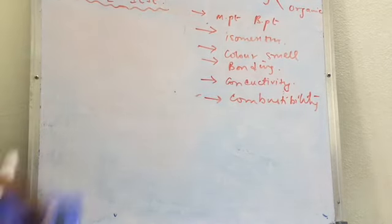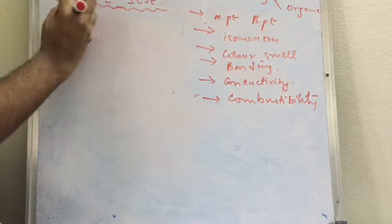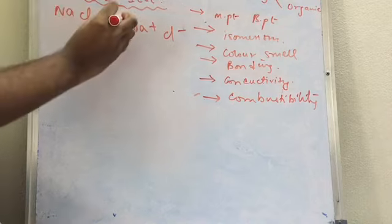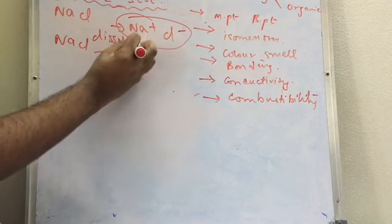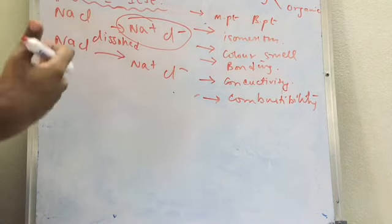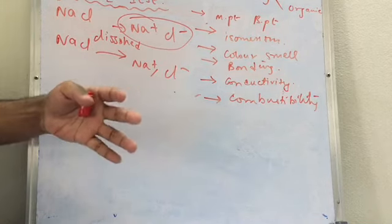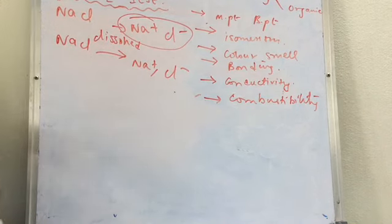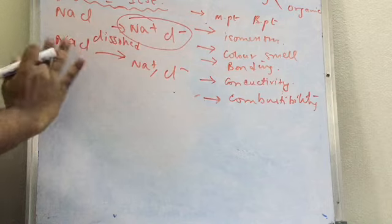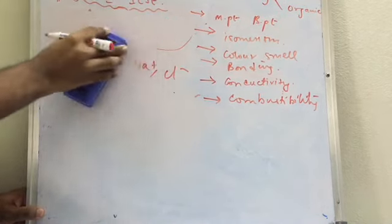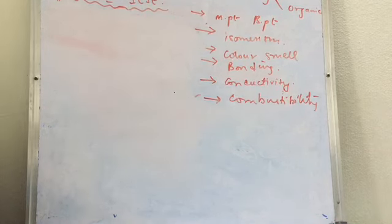The next point is conductivity — electrical conductivity, not thermal conductivity. Conductivity in ionic compounds is because of the positively and negatively charged ions — the cation and anion. When NaCl is dissolved in water, you get Na⁺ and Cl⁻. Electrolysis occurs, and the splitting of ions takes place, making conduction easier. In covalent bonding, there is no cation or anion, so conduction of electricity is very, very less. The basic reason ionic compounds conduct electricity is the positive and negative charges, which are absent in organic compounds.